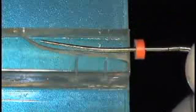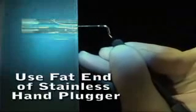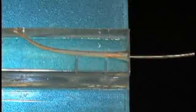After the cone is cemented, it's going to be seared off at the orifice. We push the high heat icon on the System B heat source, sear it off, then condense the gutta-percha at the orifice with a fat stainless steel hand plugger. After that, we're going to bring the continuous wave plugger in cold.